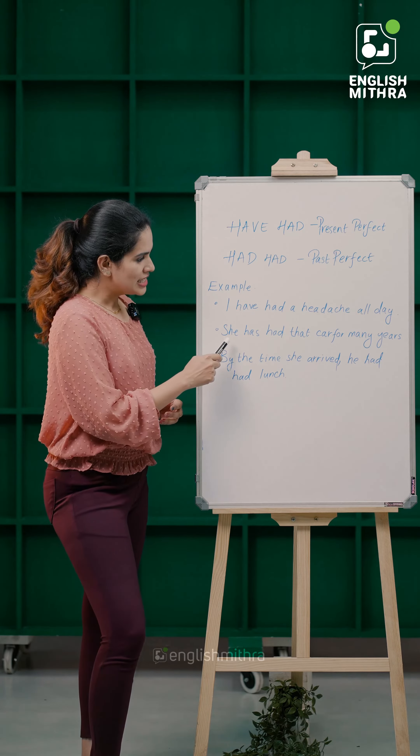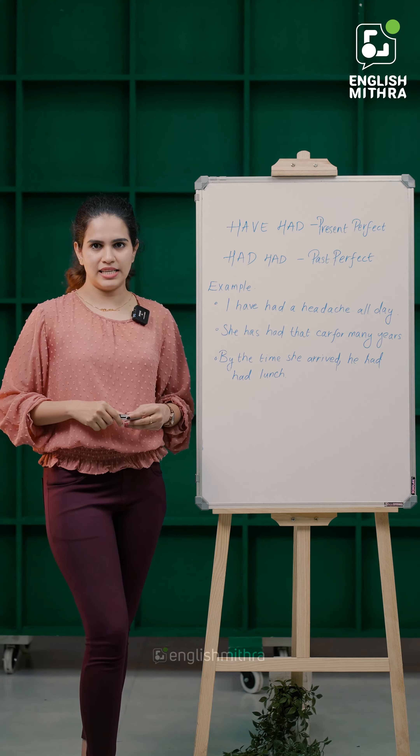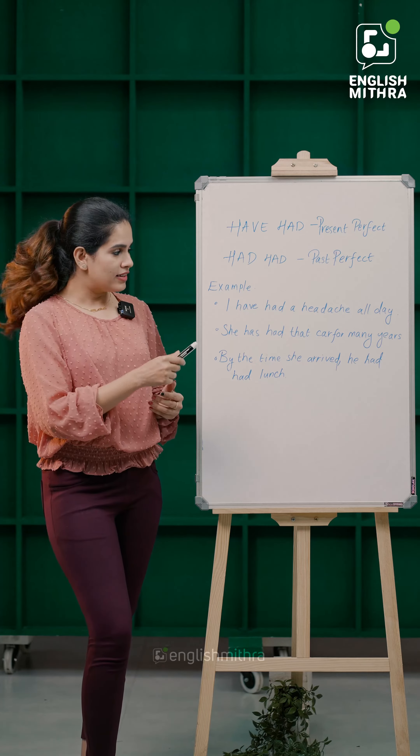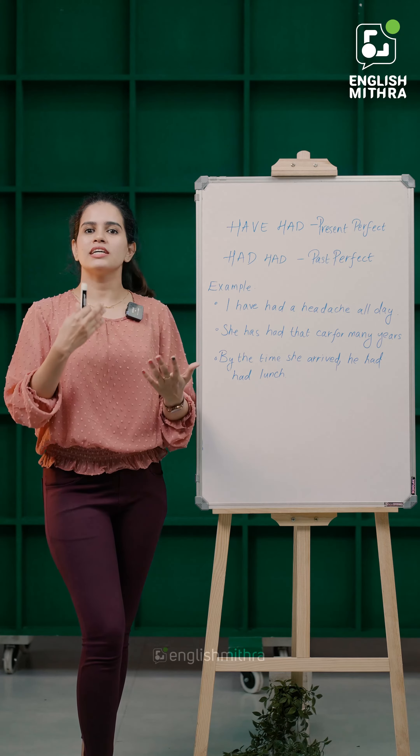Example 2. She has had that car for many years. The car was owned in the past and is still owned in the present, so we use present perfect tense.